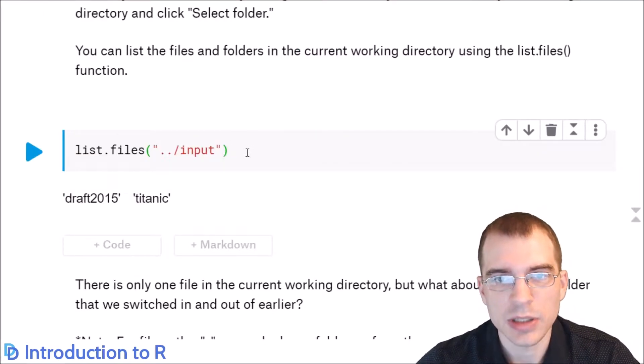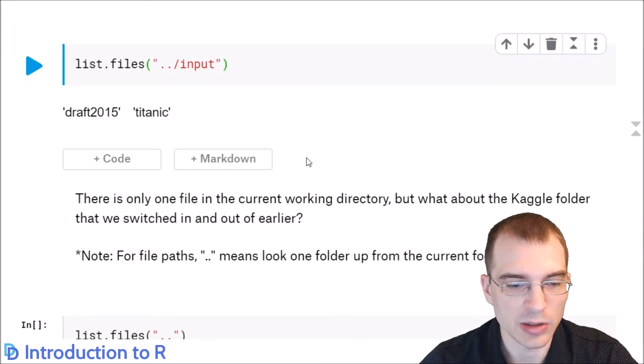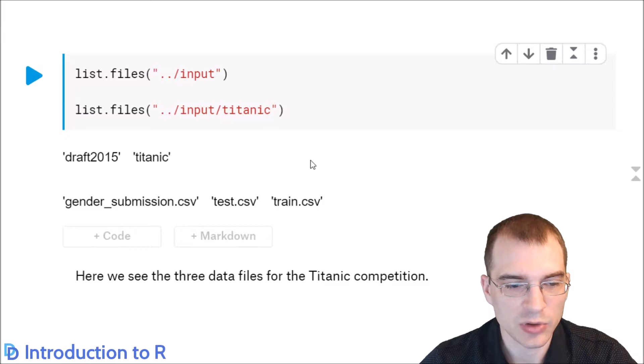You can list all the files in a given directory using the list.files function. Here we're calling list.files on ../input. The dot dot goes up a level in the folder hierarchy. So we're currently in Kaggle/working, the dot dot throws us back into the Kaggle folder, and then we're going to the input folder. In Kaggle, there is both an input folder, where the input data is, and a working folder, which is what we're currently in. When we run that, it shows we have a draft2015 file and a Titanic file.